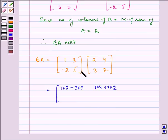Now, multiplying second row of B by first column of A, we get -2 into 2 plus 5 into 3. Now, second row by second column, so -2 into 4 plus 5 into 2.